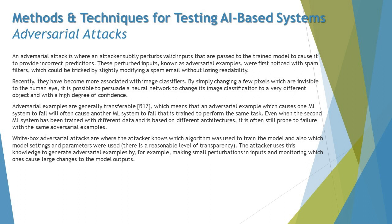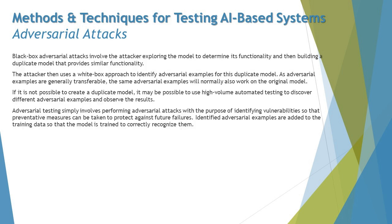For black box adversarial attacks, the attacker explores the model to determine its functionality and then builds a duplicate model that provides similar functionality. The attacker then uses a white box approach to identify adversarial examples for this duplicate model. Since adversarial examples are generally transferable, the same adversarial example will normally also work on the original model.